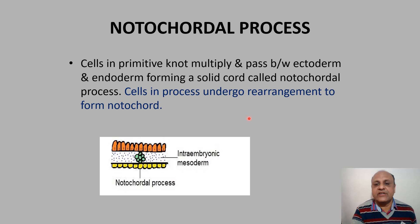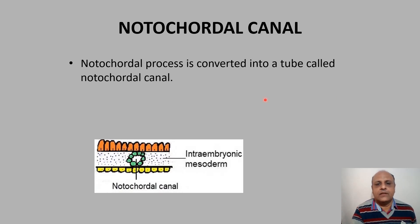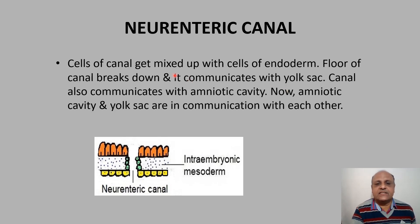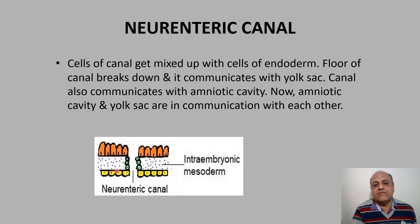Cells in the notochordal process undergo rearrangement to form the notochord. The notochordal process is first converted into a tube called the notochordal canal, lying between ectoderm, endoderm, and mesoderm. Then the floor of the canal breaks down and communicates with the yolk sac below, forming the neuroenteric canal — which connects the amniotic cavity and yolk sac so they communicate with each other.